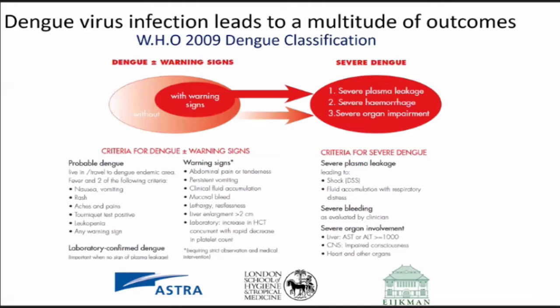Back in 2009, WHO improved these guidelines and started talking about identifying dengue early — looking for warning signs — so that you can identify dengue and treat early and try to prevent or better treat severe dengue disease. Unfortunately, the warning signs are not perfect, and even those without warning signs might still end up with severe dengue. That's why we need to keep a close eye on this disease.